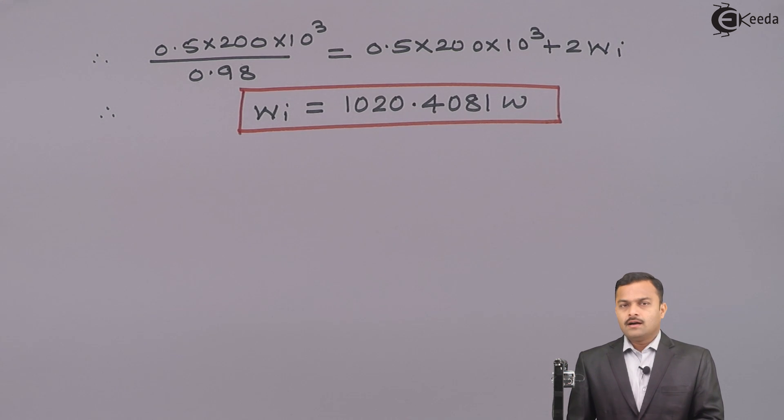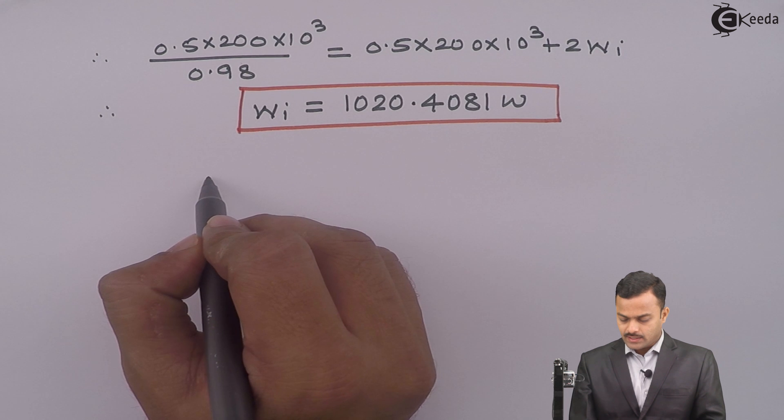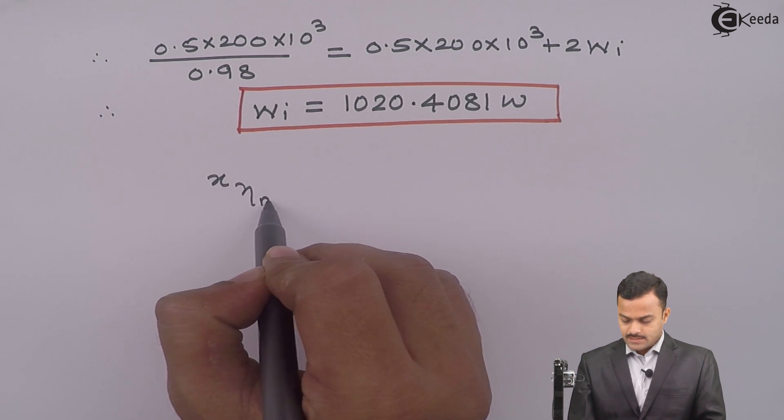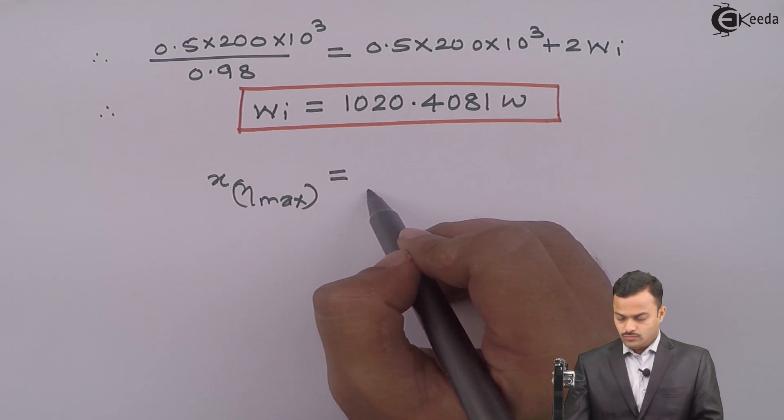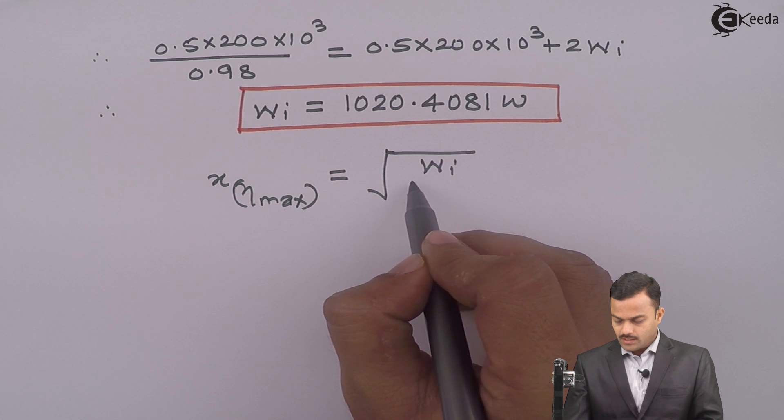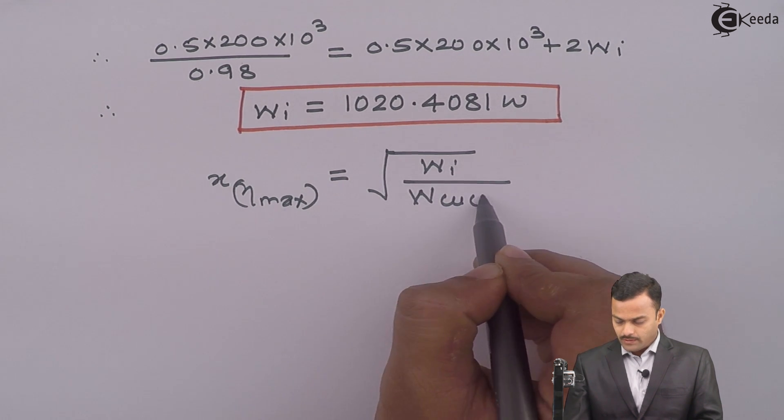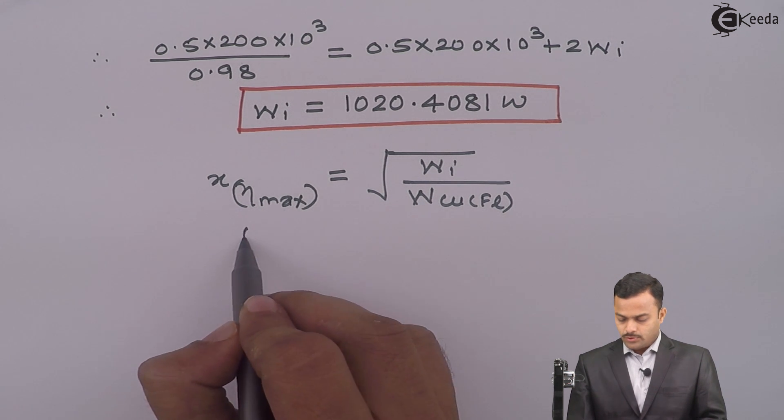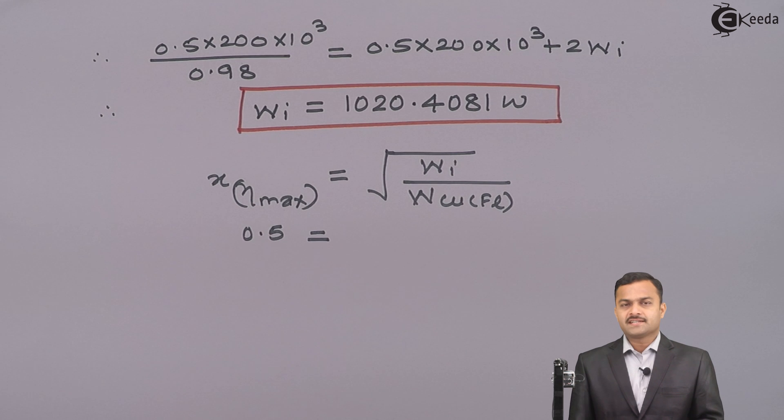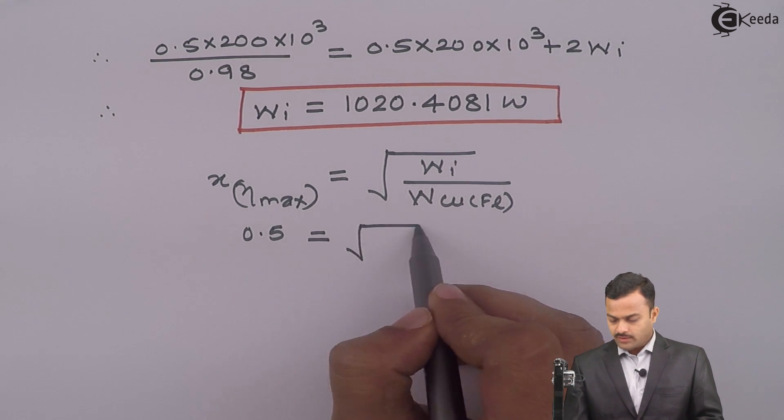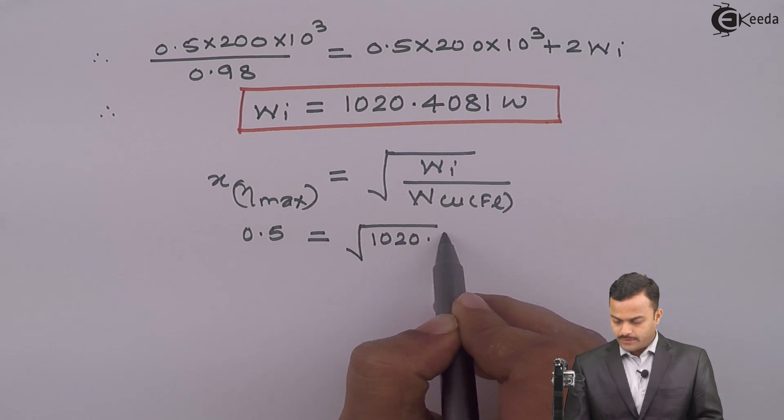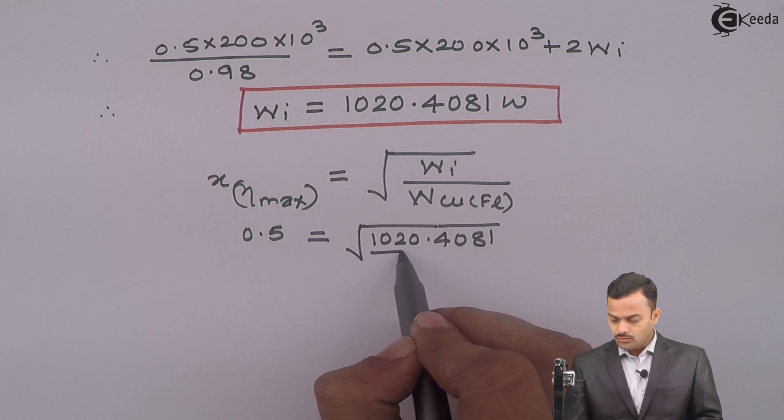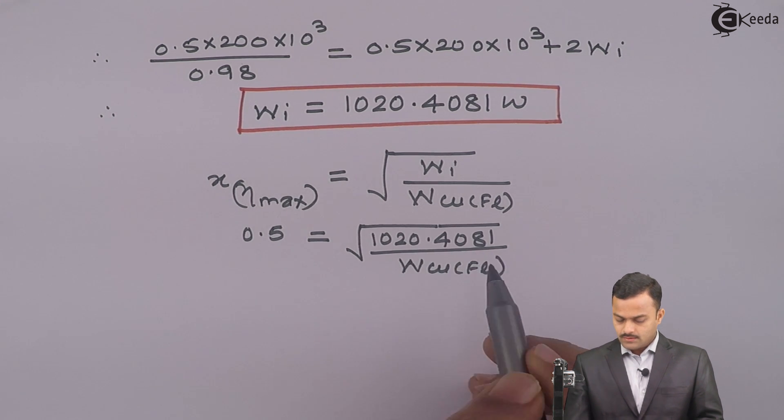Now second, I want to find out efficiency at rated load, but for that purpose I should know WCUFL full load copper loss. So for that purpose, we are going to use this formula: X where efficiency is maximum is equal to root of WI upon WCUFL. So 0.5 is a load at which I am getting maximum efficiency, for that core loss is 1020.4081. So only unknown is full load copper loss.